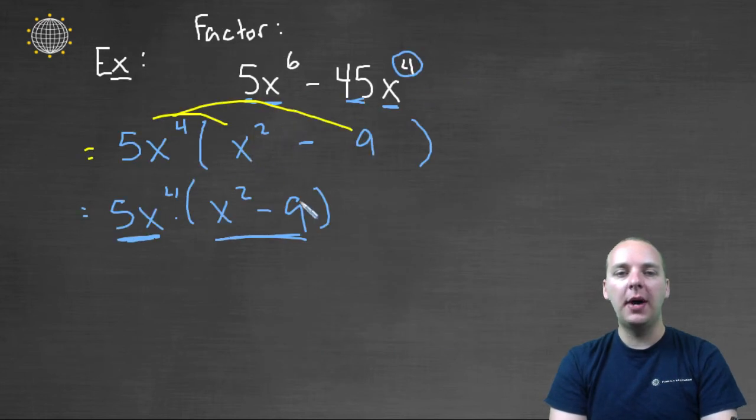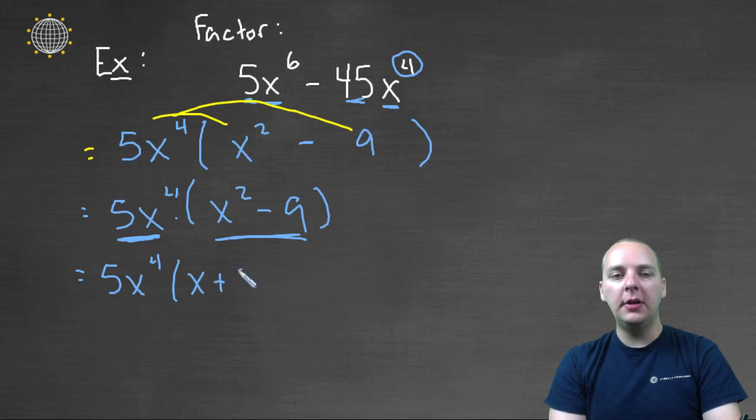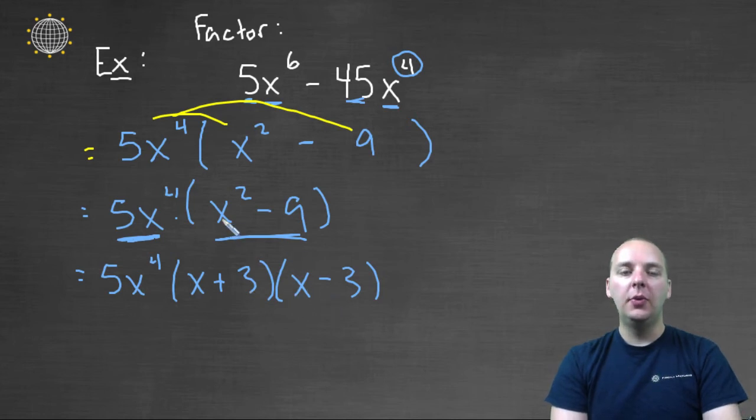It's x squared minus three squared. So this will factor as five x to the fourth, don't forget to write the leading term, of course, times x plus three, times x minus three. That's a plus b, times a minus b, when you have a squared minus b squared.